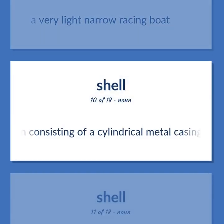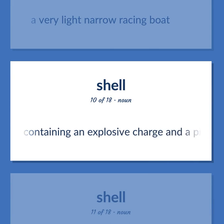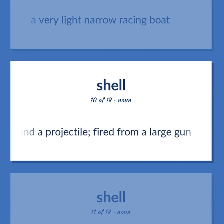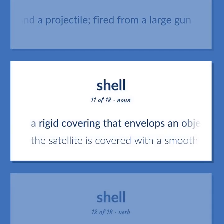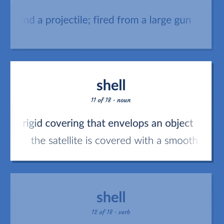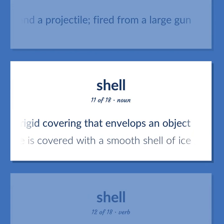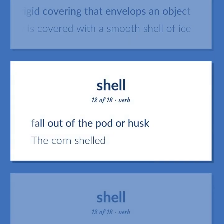Ammunition consisting of a cylindrical metal casing containing an explosive charge in a projectile fired from a large gun. A rigid covering that envelops an object. The satellite is covered with a smooth shell of ice. Fall out of the pot or husk. The corn shells.